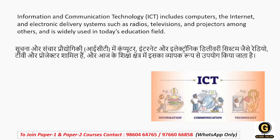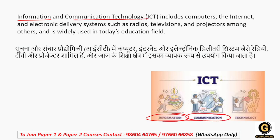इसी के साथ आप शुरू करते हैं ICT की basic definition से। सबसे पहले students, आपको ICT की full form पता होनी चाहिए, जो की है Information and Communication Technology। Information का मतलब है सूचना, कहीं से भी हमें सूचना मिलती है। Internet की मदद से हम लोग communicate कर सकते हैं, यानि कि संचार कर सकते हैं, बातचीत कर सकते हैं। Technology की मदद से हम लोगों को कहीं जाने की जरूरत नहीं है — हम घर बैठे ही information collect और communicate भी कर सकते हैं।